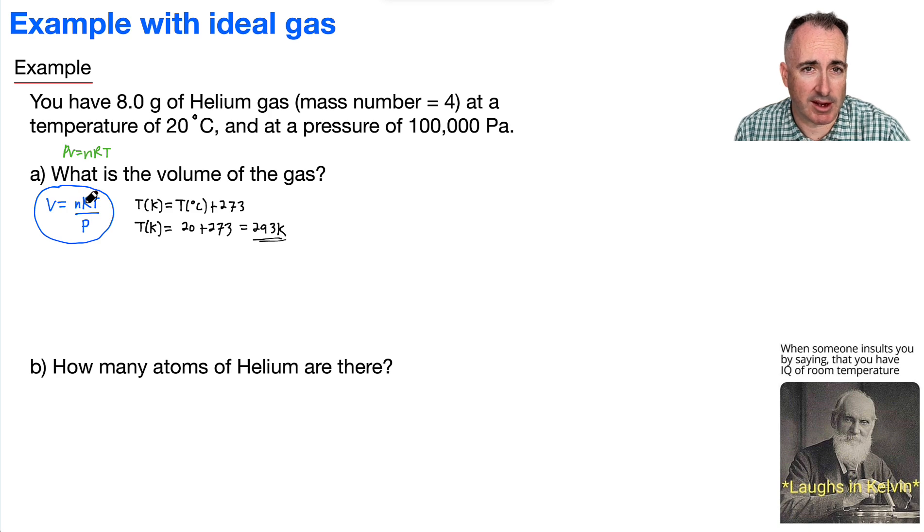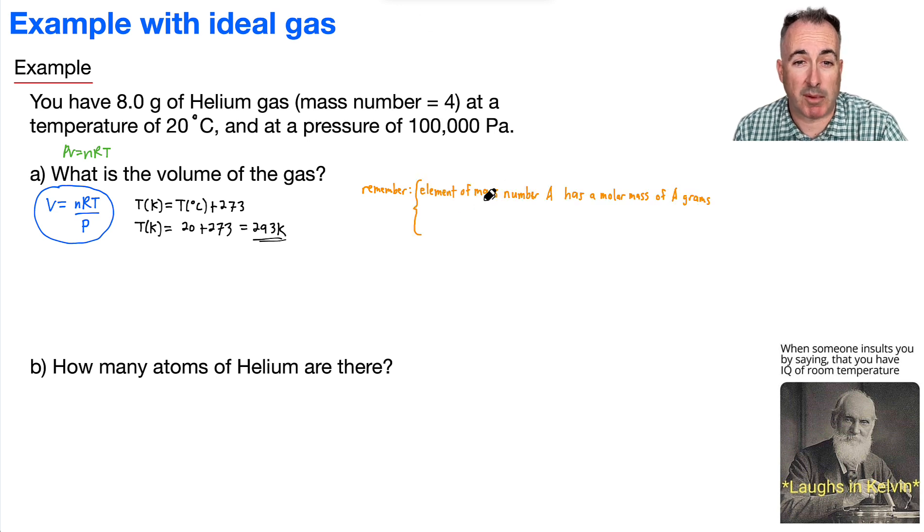We need also to know n, though, and that's going to be the tougher one. So how do we actually do n? Well, I do remember that an element with mass number a has a molar mass of a grams. Also, remember that n equals the actual mass over the molar mass.